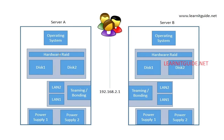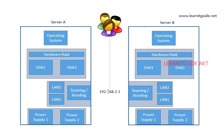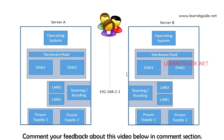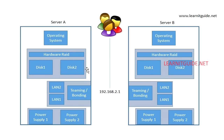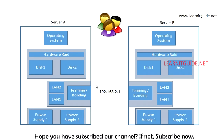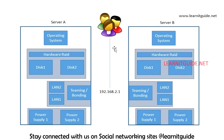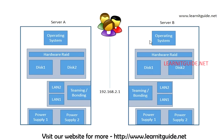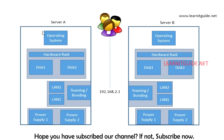In an active-active load balancing setup, IP 2.1 is configured on both nodes. Client load is distributed between the two servers based on demand. For example, if 150% of load comes in and each server can handle 100%, each takes 75% — handling a total of 200% capacity. With active-passive, only one server handles 100%, but with active-active you get 100+100 = 200% performance.